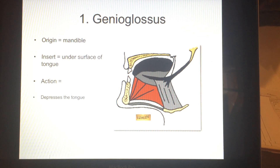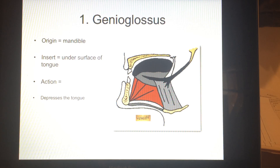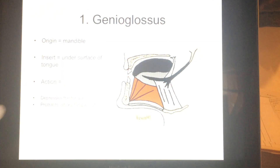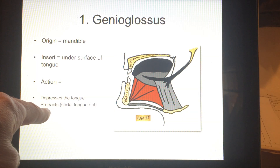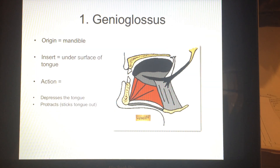First action: it depresses the tongue. Depression means down — any body part moving down in standard position. So it pulls the tongue down in your mouth. When's that important? When you open your mouth to put food in. Second action: since the origin is also slightly in front, it can also protract — protract means any body part moving forward. So this muscle pulls the tongue forward and you can stick your tongue out of your mouth. That's the genioglossus.